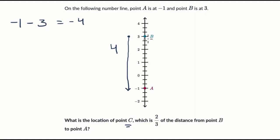Another way to think about it is, you go three to get to zero, and then you go another one. So that is four to get to negative one. So we want to go two-thirds of the way down this four.